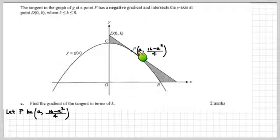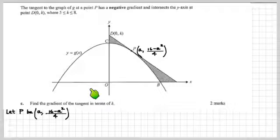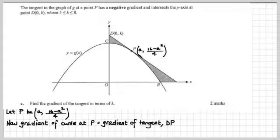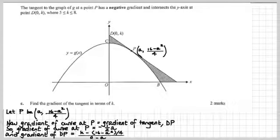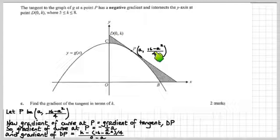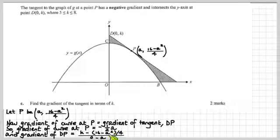This is a major step forward. We call the point P as (a, (16 - a²)/4). The gradient of the curve at point P equals the gradient of the tangent, which is minus a half times a. We can also express gradient as rise over run: that's (k minus the y-value at P) over (0 minus a). Connecting those two equal expressions gives us a relationship between k and a.